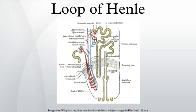The hydrogen ion for the antiporter comes from the enzyme carbonic anhydrase, which takes water and carbon dioxide and forms bicarbonate and hydrogen ion. The hydrogen ion is exchanged for the Na+ in the tubular fluid of the loop of Henle.